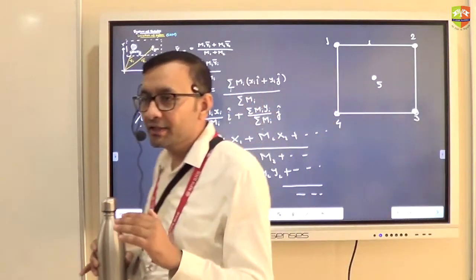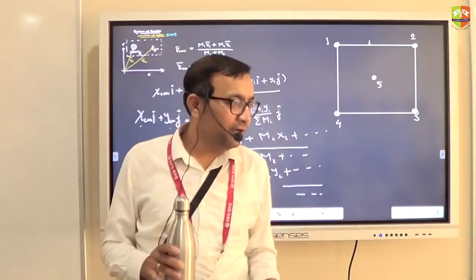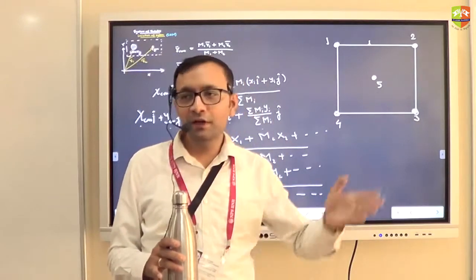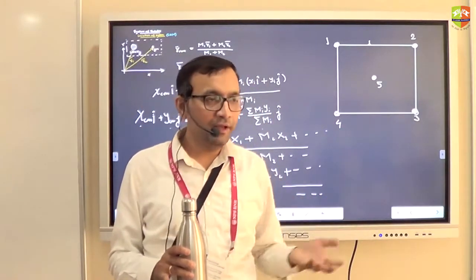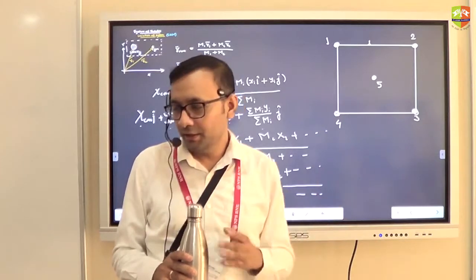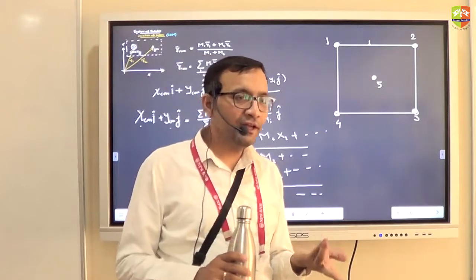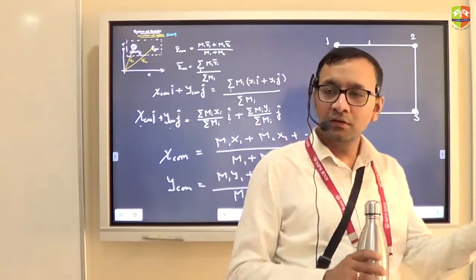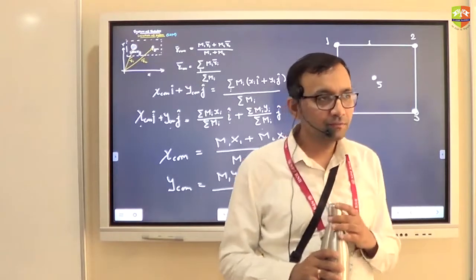The first thing you should do is place your xy coordinate axis. Only then will you know the x and y coordinates of the particles. Your x and y coordinates could be different depending on what coordinate axis you choose.